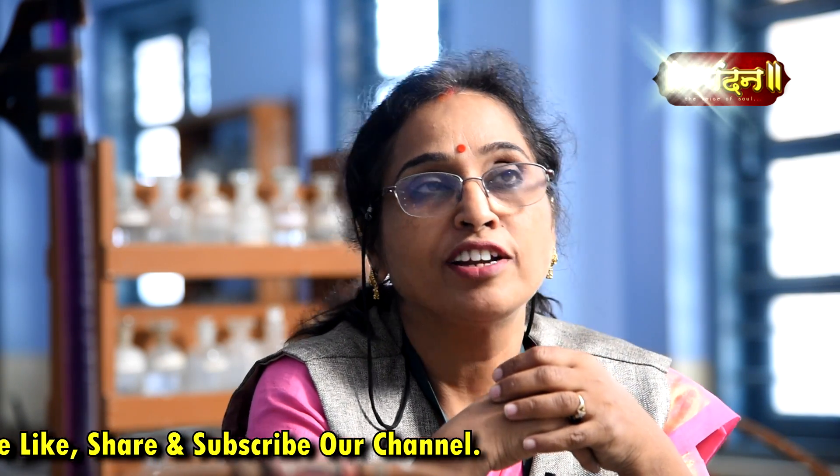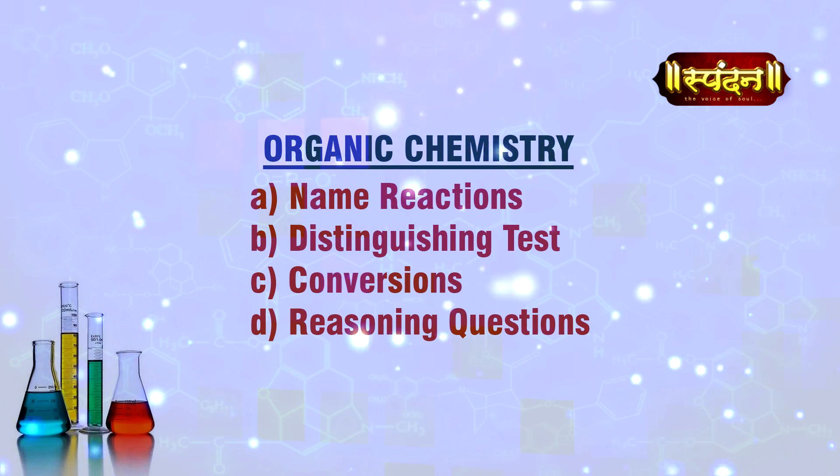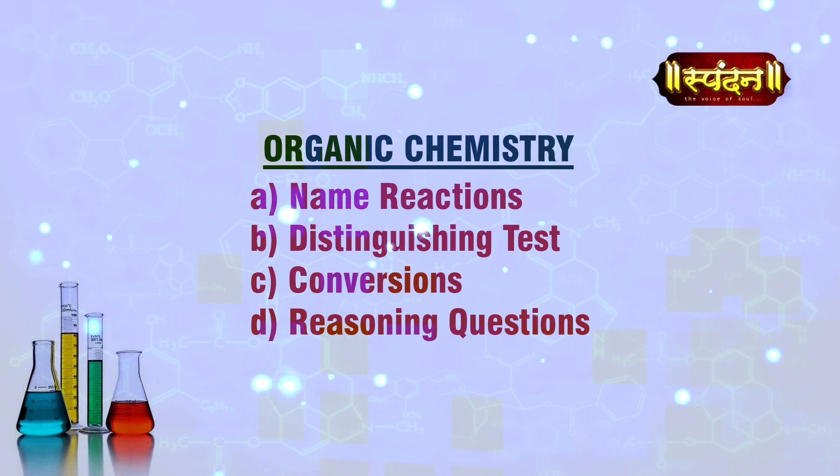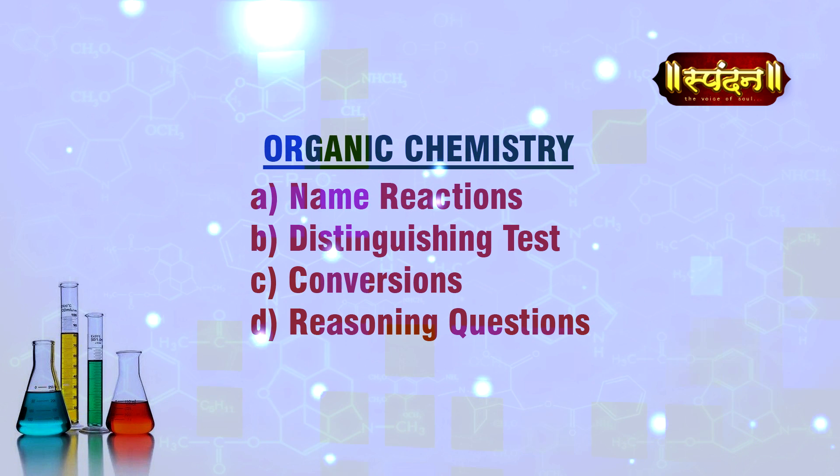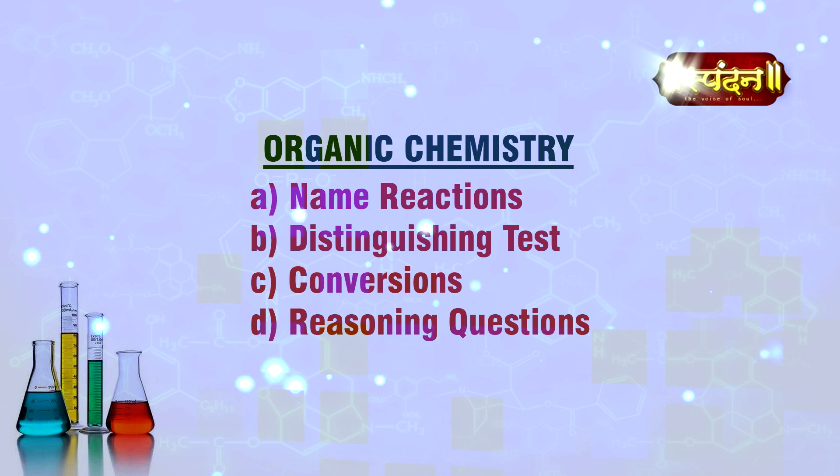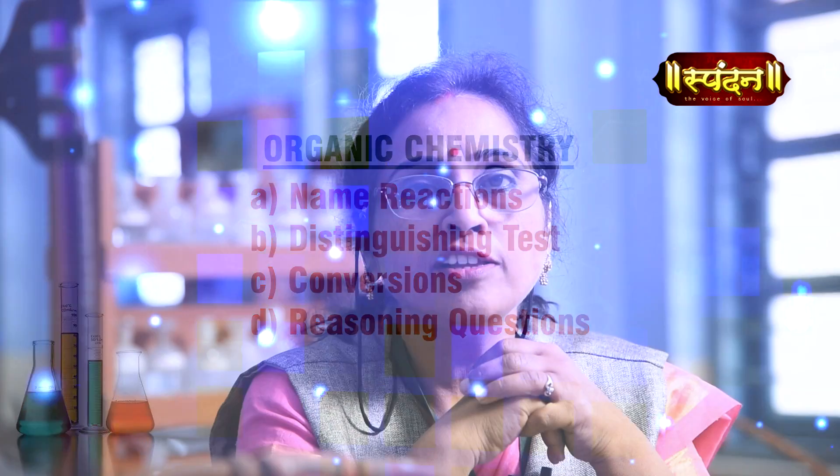Starting with organic chemistry, we shall begin preparation with amines and nitrogen-substituted organic compounds, followed by phenols and ethers, alcohols, haloalkanes and haloarenes, and aldehydes, ketones and carboxylic acids. The questions normally asked in these topics are name reactions, distinguishing tests, conversions, and reasoning questions. I would advise you to refer to previous years' question papers for these topics.